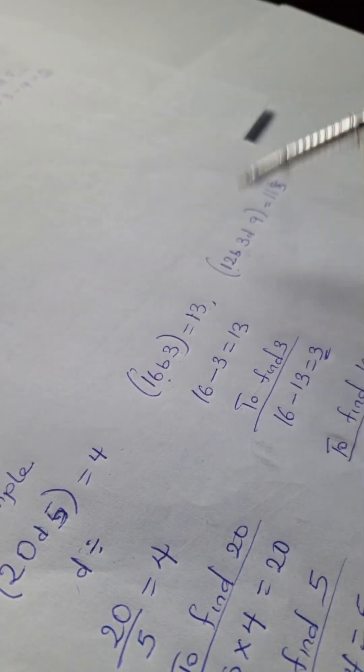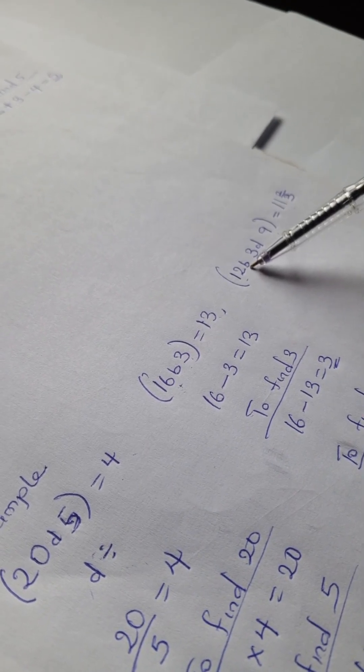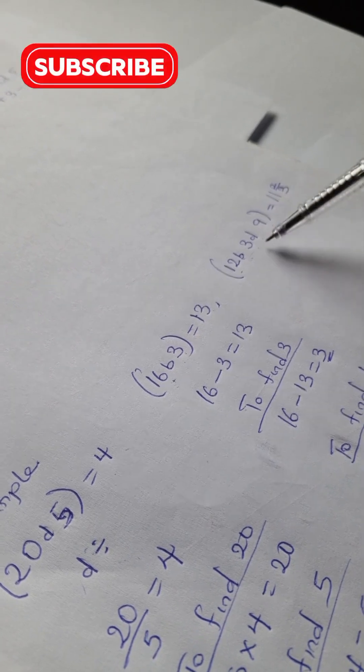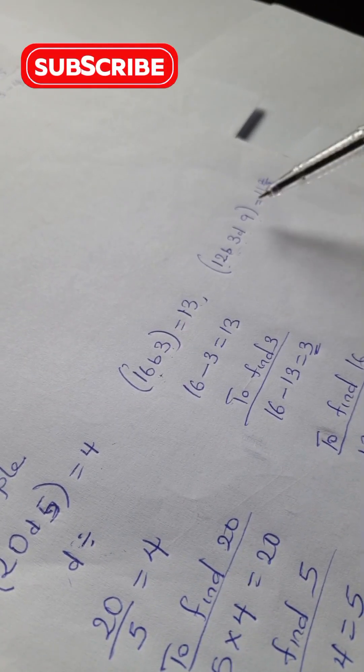So we're going to apply the same combination of the signs here. Wherever you see B, you use your subtraction, and wherever you see your D, you divide.